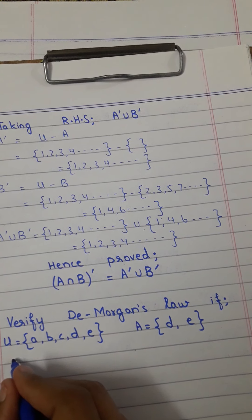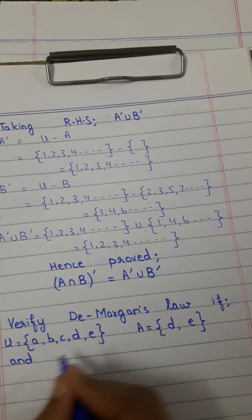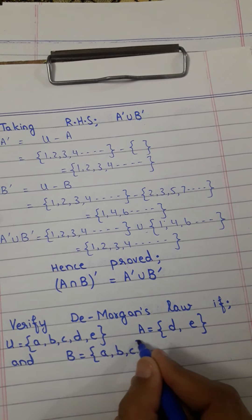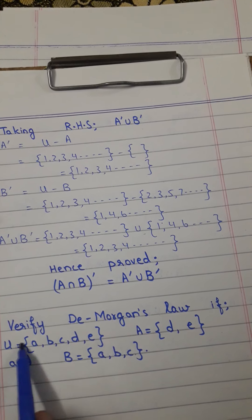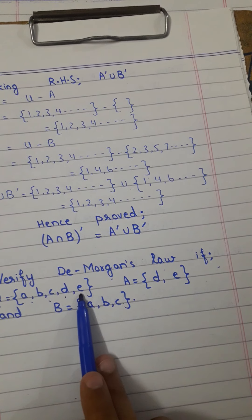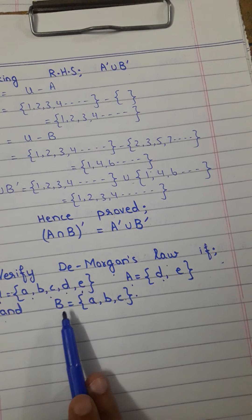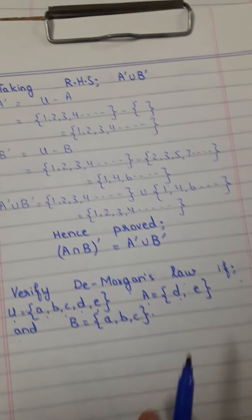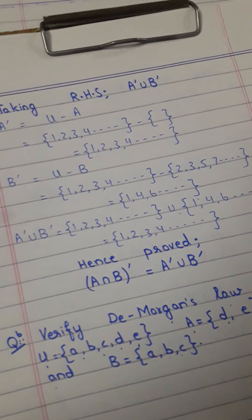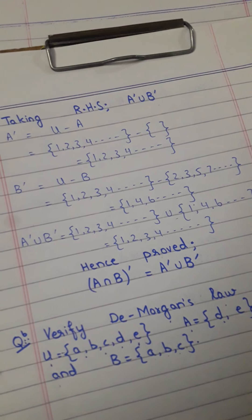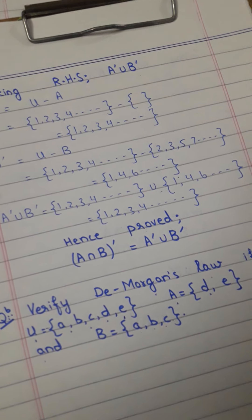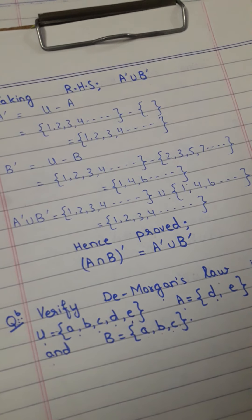This is not part of your exercise but is for your practice, so that you understand De Morgan's Laws. The question is: verify De Morgan's Laws if U = {a, b, c, d, e}, A = {d, e}, and B = {a, b, c}. Additionally, I want to mention associative law, commutative law, and distributive law. Is it clear? Thank you, students.